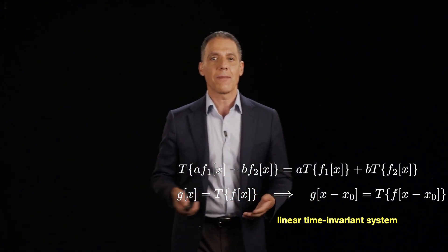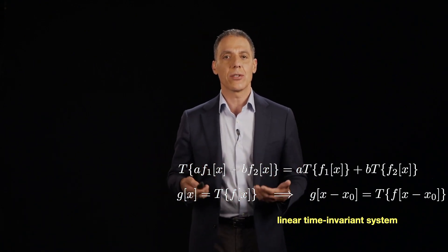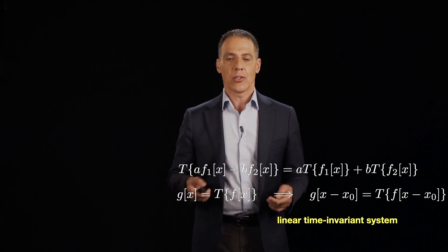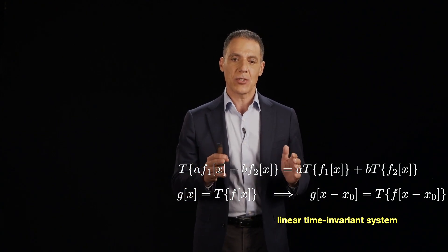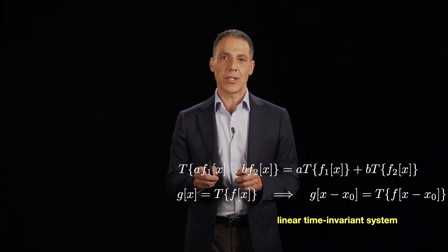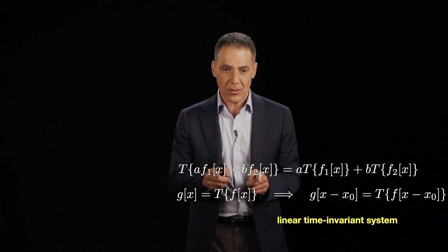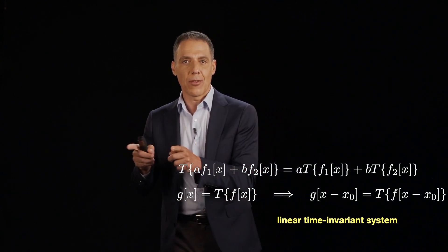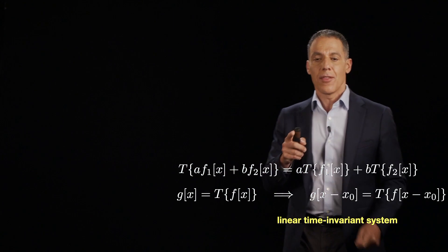So let me first start off by talking about what a linear time invariant system is. Remember again that a discrete time system T, that you see over here, takes as input a signal and outputs another signal.